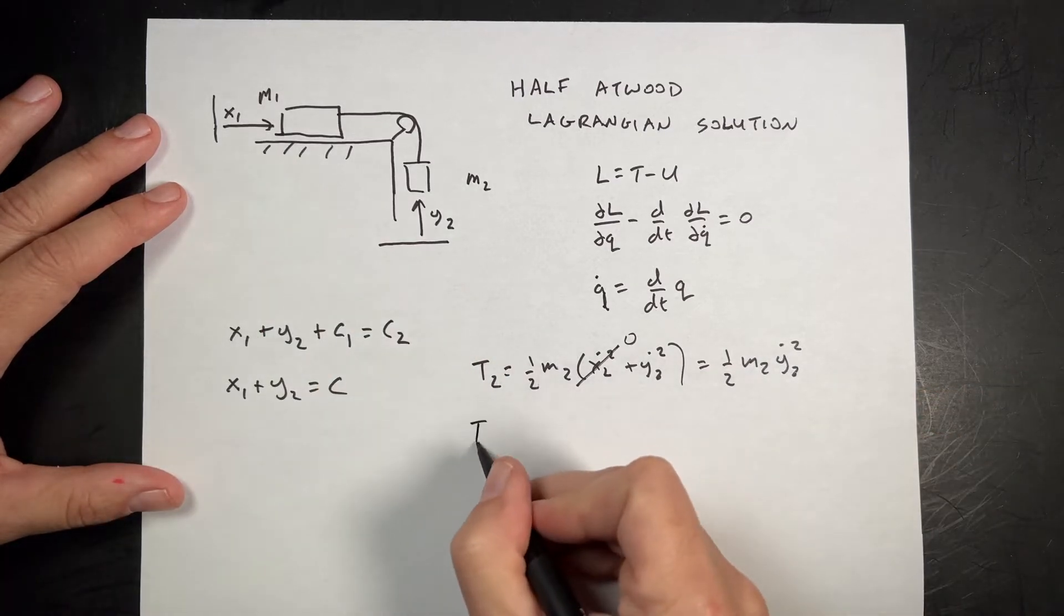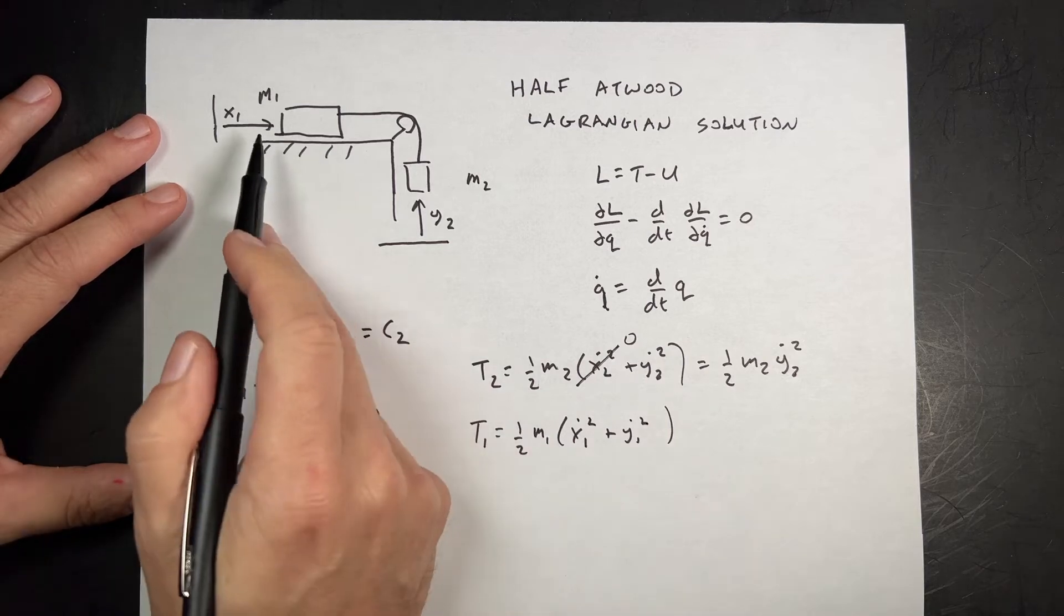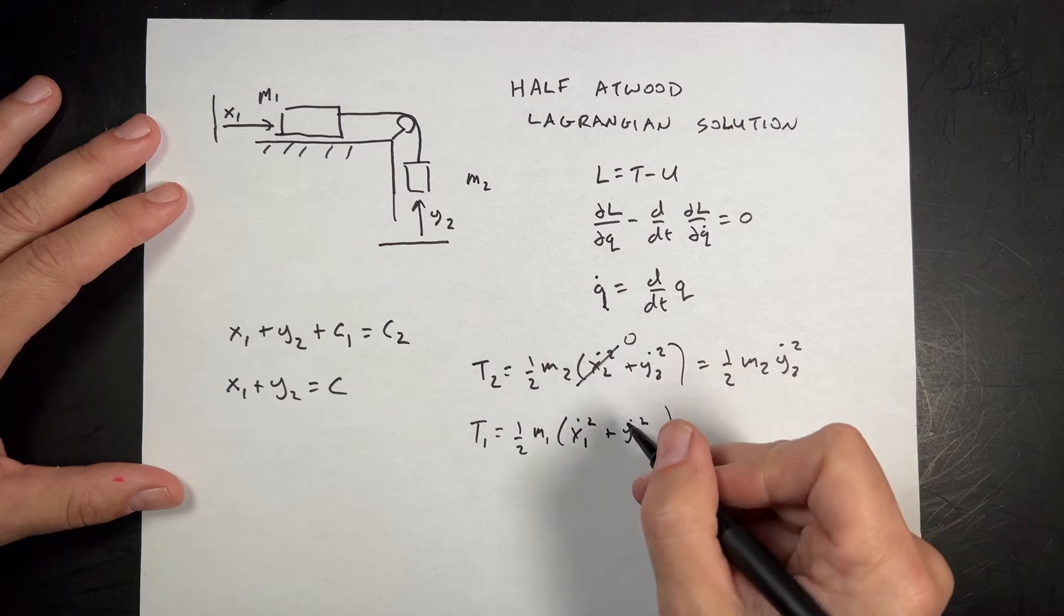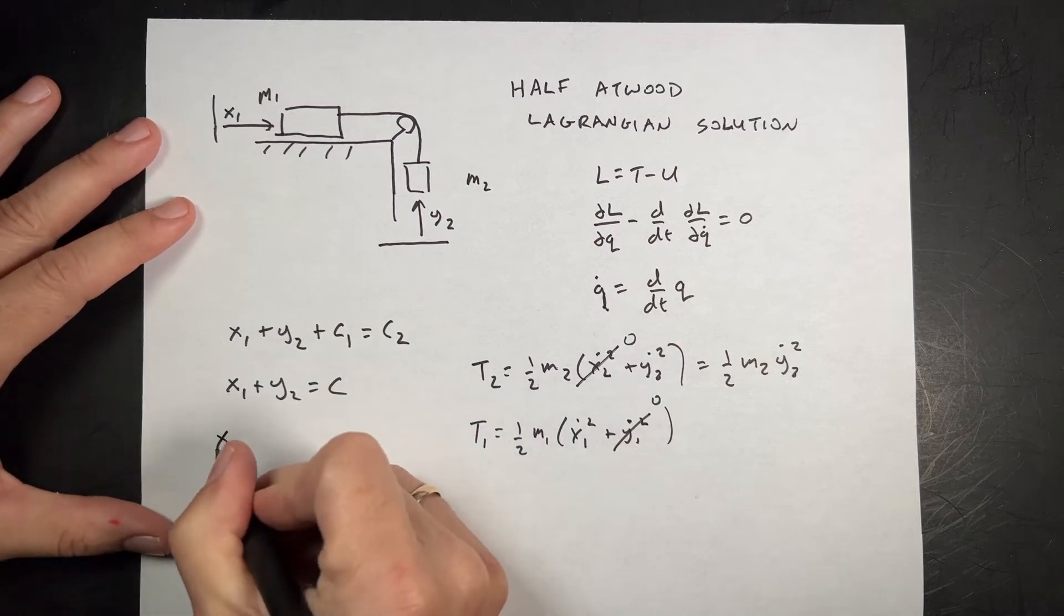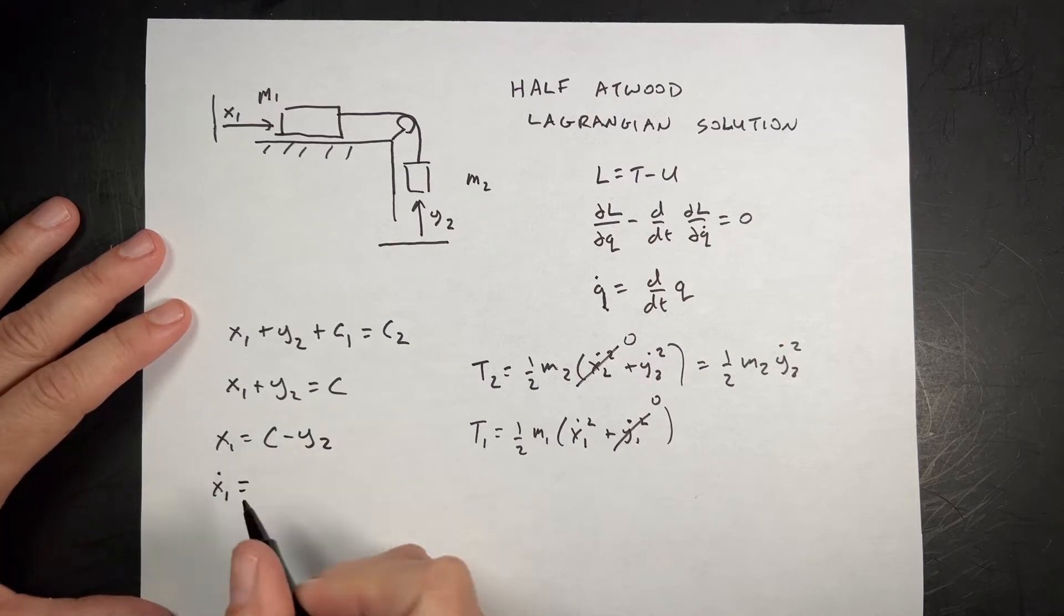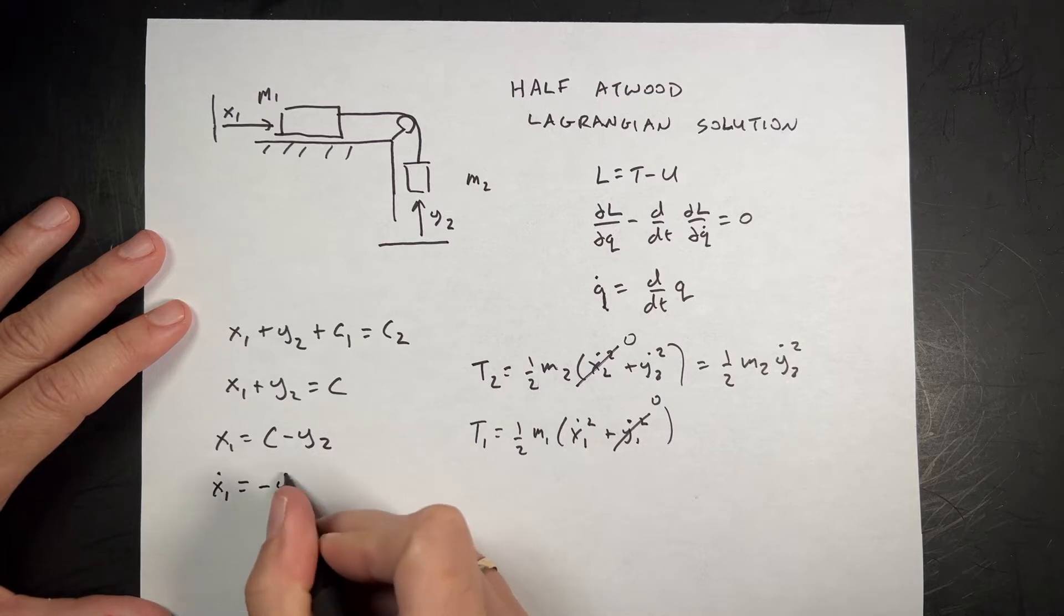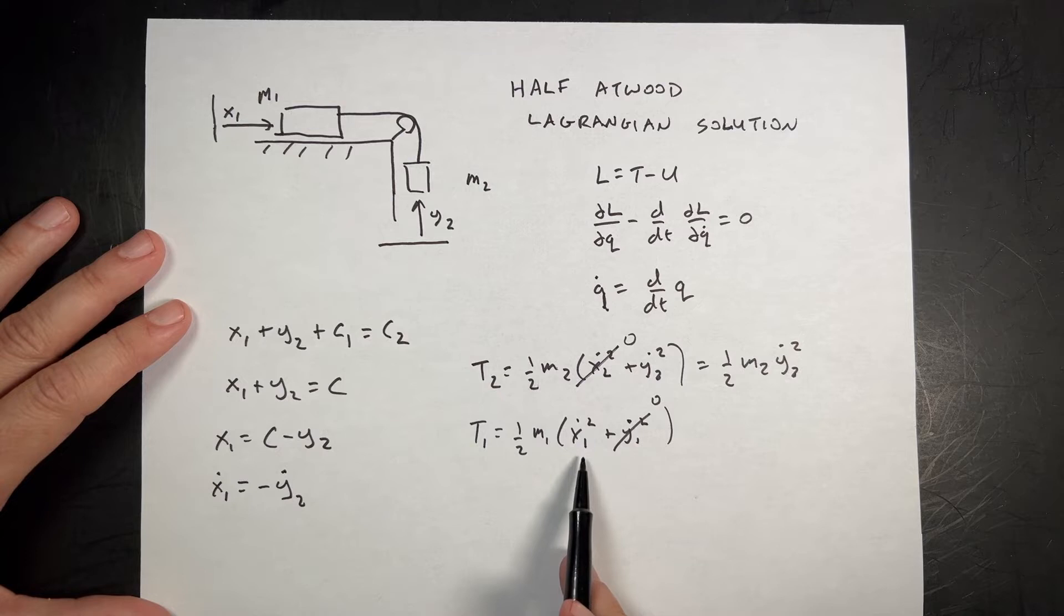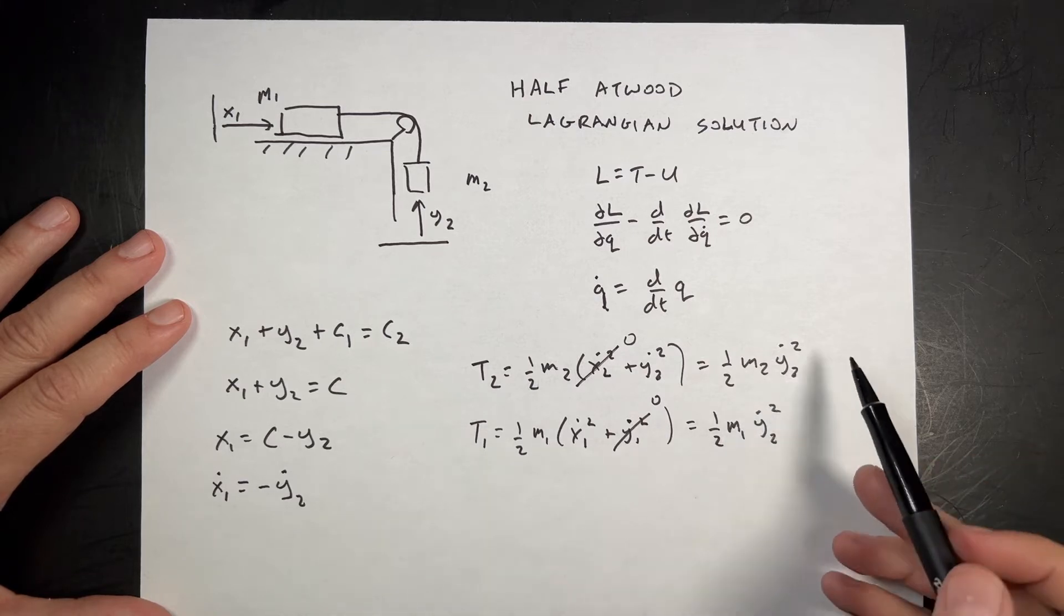What about the kinetic energy of that one? Well, T1 is one-half m1 x1 dot squared plus y1 dot squared. But if that stays on the table, then y1 is constant and the derivative is zero, so that term goes away. But I have x1 dot squared. I don't want x1, I want one variable. So let's solve this for x1: x1 equals c minus y2. Now I can take the derivative: x1 dot equals negative y2 dot. So x1 dot squared is negative y2 dot squared, giving me one-half m1 y2 dot squared.